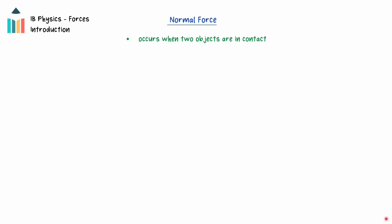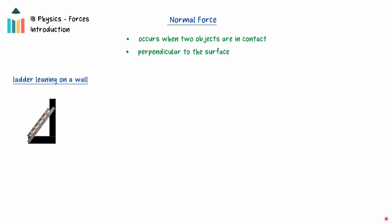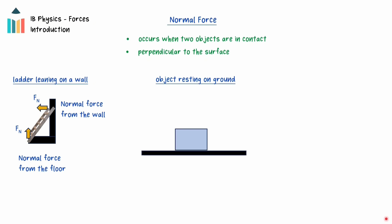The normal force is the force that occurs when two objects come in contact with each other. It is the force acting on an object due to the surface that it is in contact with and is perpendicular to the surface at all times. For example, if a ladder is leaning on a wall, there will be two normal forces acting on the ladder, one due to the ladder's contact with the floor and a second due to the ladder's contact with the wall. There is no formula to calculate the normal force. It must be found by analyzing other forces in the scenario to find the amount of force that pushes the surfaces together. For example, if an object is sitting on level ground, a normal force equal to the force of gravity will act upwards on the object.